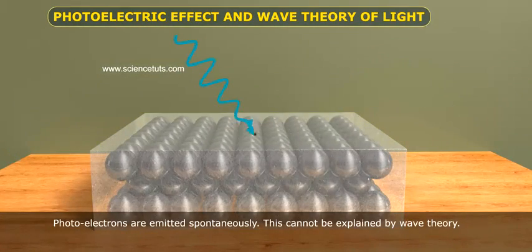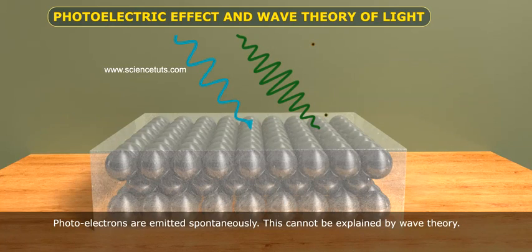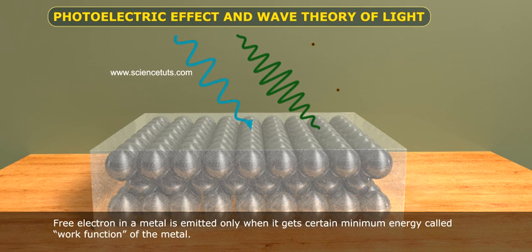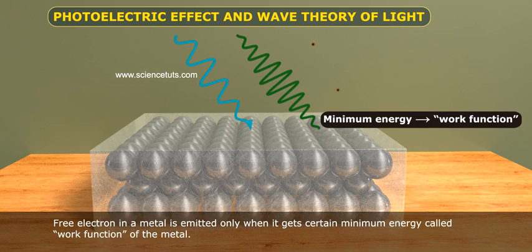Photoelectrons are emitted spontaneously. This cannot be explained by wave theory. Free electrons in a metal is emitted only when it gets a minimum energy.